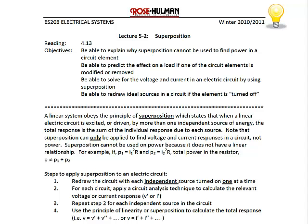Superposition states that if you want to find the voltage or current through a resistor, you can find the voltage or current due to each of the independent voltage or current sources acting alone and then sum them together. Please note that superposition is only used to find voltage and current, because power is a non-linear relationship based upon I squared R or V squared over R, so you cannot use superposition to find the power delivered to a resistor.